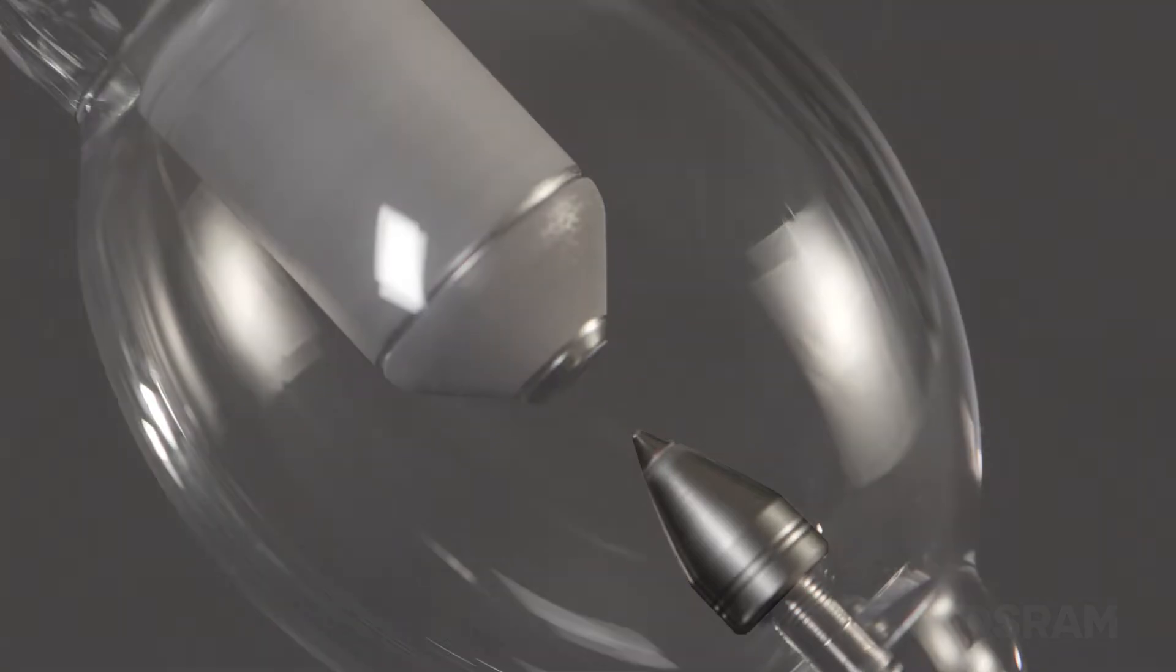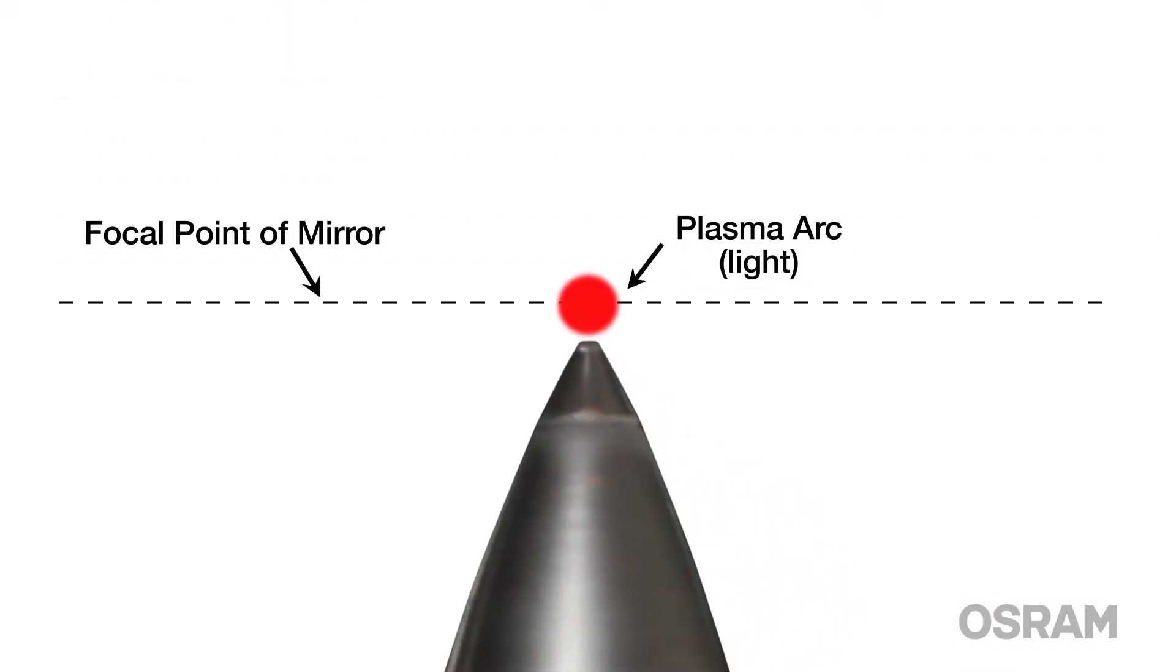It is important to also note that as the lamp ages, the cathode tip will start to erode away and flatten over time, shifting the hotspot on the cathode tip out of the reflector's focal point, decreasing the maximum light output of the projector.